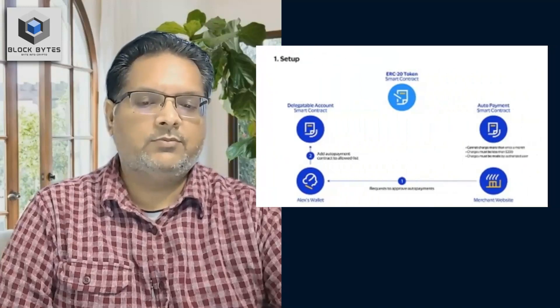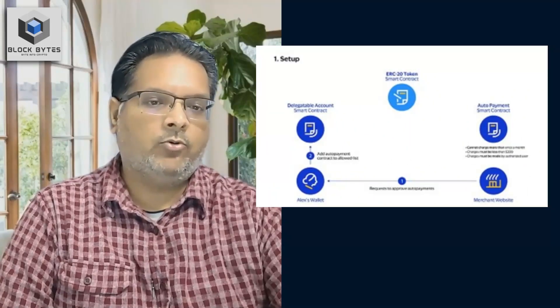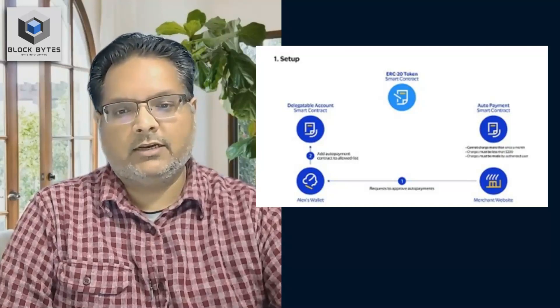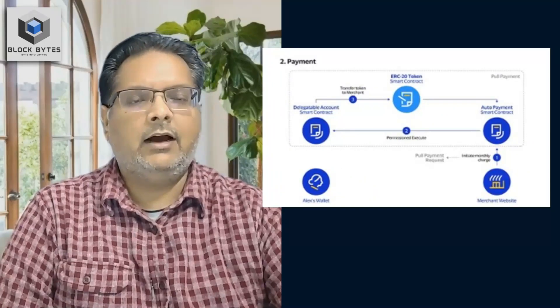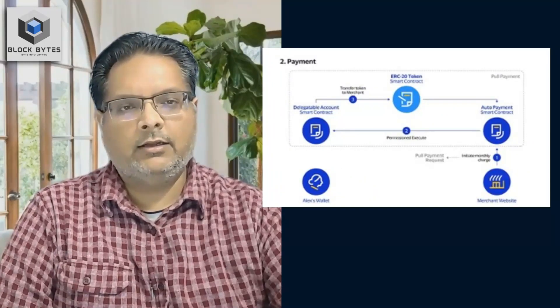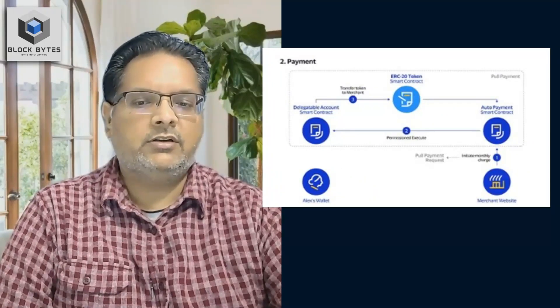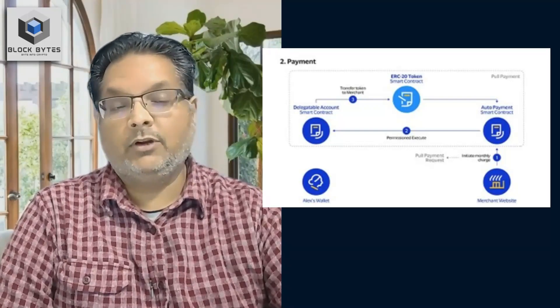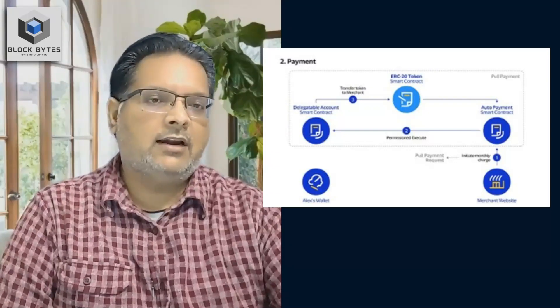Visa devised a solution to this problem using delegable accounts, which is an allowed list of pre-approved transactions. When a merchant triggers a payment, the auto payment contract causes the user's account to initiate a push payment. From the token's price perspective, it is like a standard push payment. This is but one example of a real-world problem addressed using account abstraction.